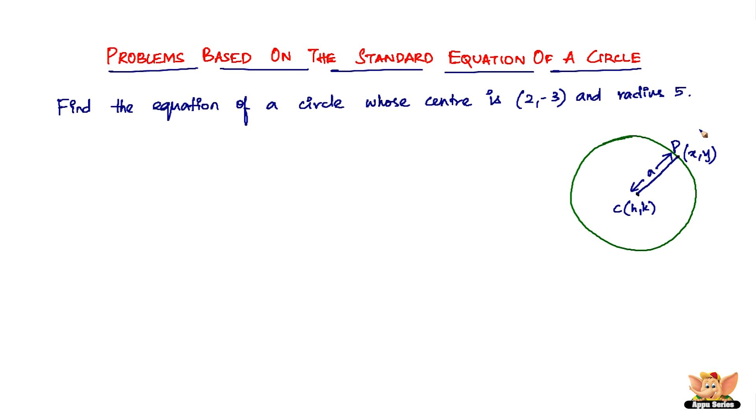Now why do we need this? Because the standard equation of a circle is given by (x - h)² + (y - k)² = a². So if somebody is asking you to find the equation of a circle whose center is (2, -3), you have to come right back to this equation.